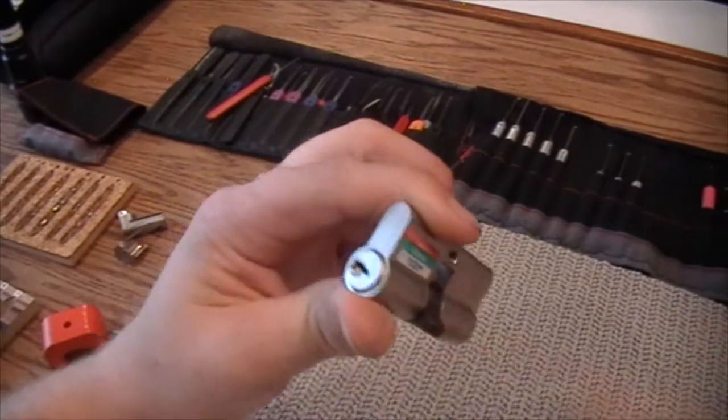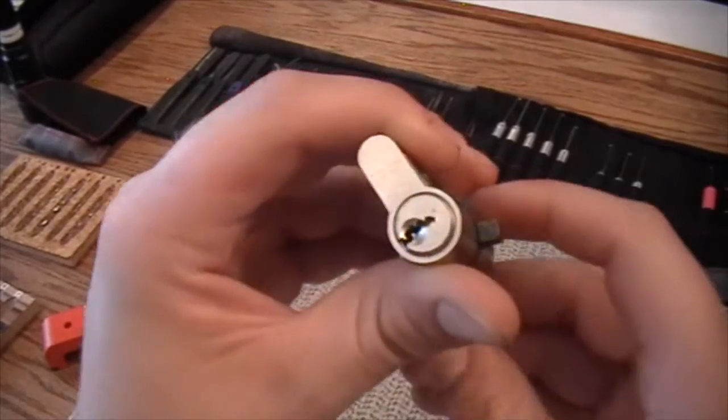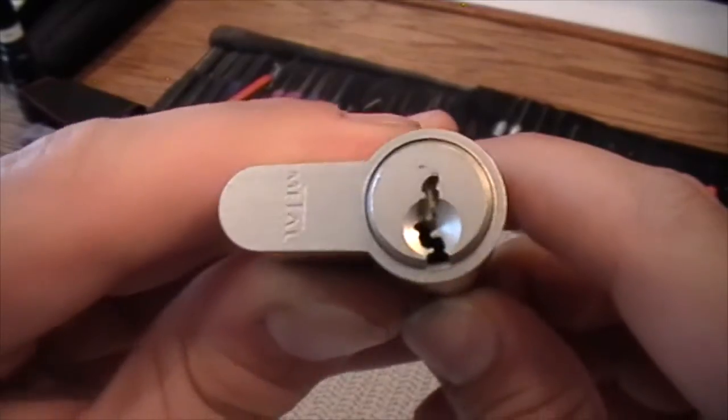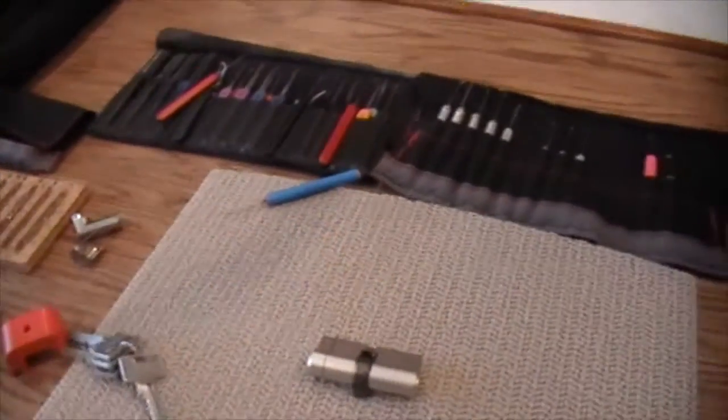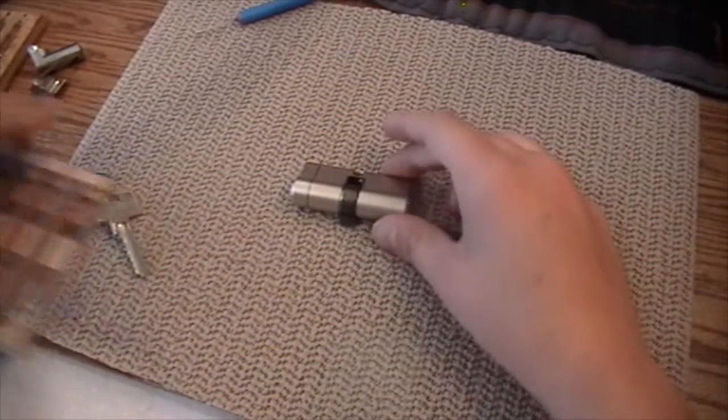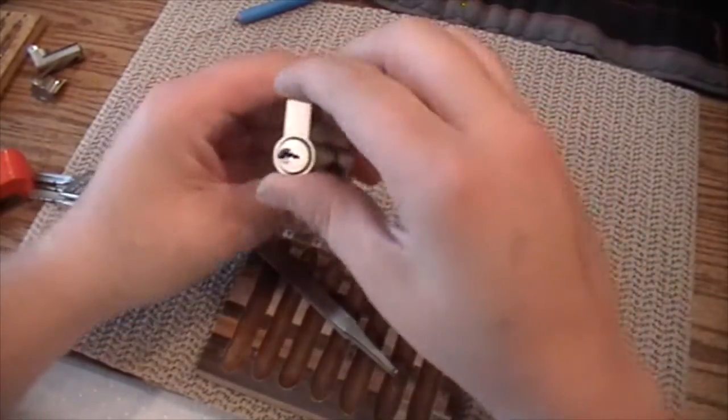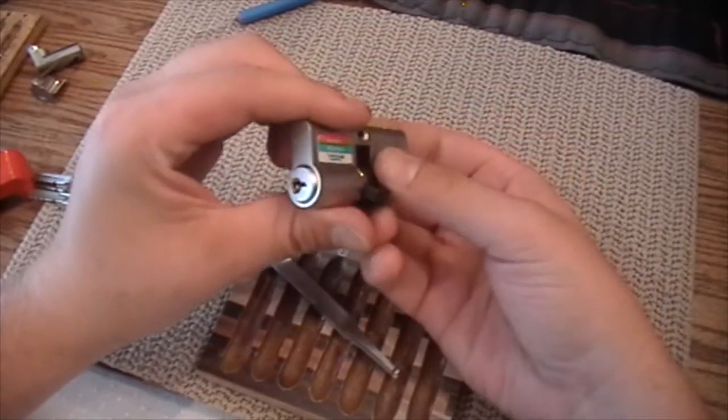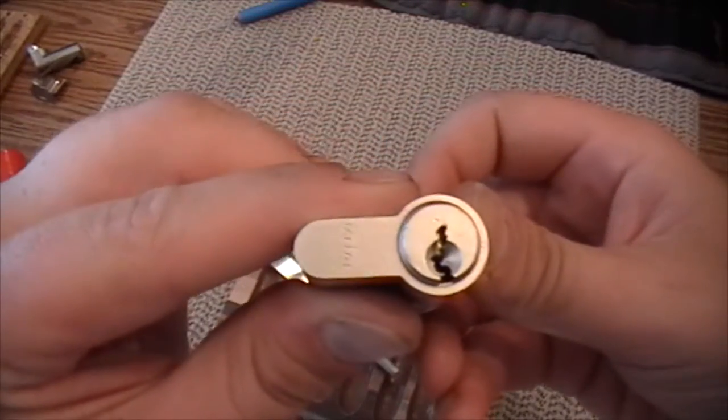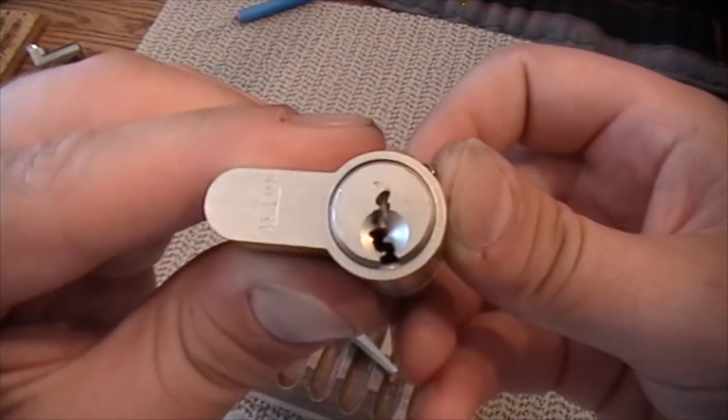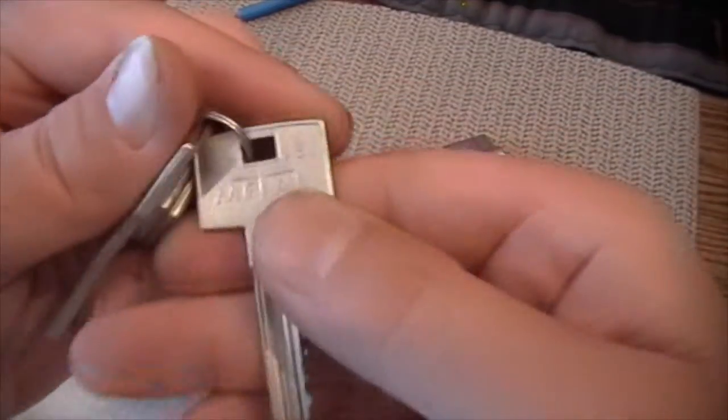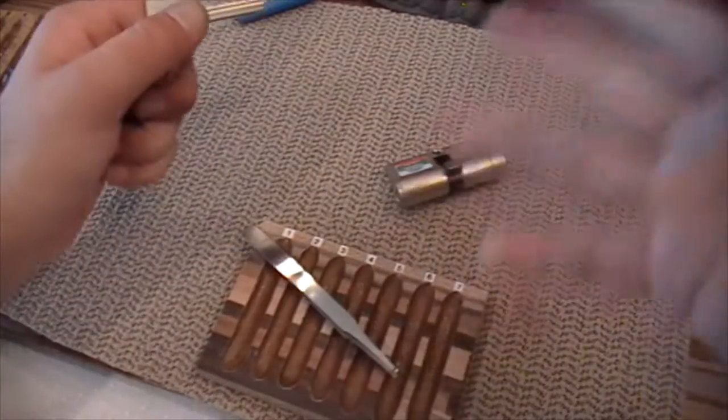As I said, this is a Bulgarian lock. And I thought it was cool because of the keyway. Look how paracentric that thing is. Which side did I pick and decide? Oh yeah, it's six pins. This keyway is called the V profile keyway.